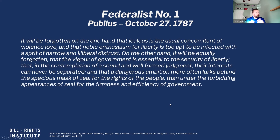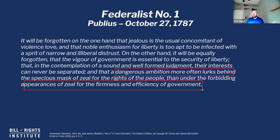He then builds on that, saying that vigor in government is essential to the security of liberty, and that in contemplation of a sound and well-formed judgment, their interests can never be separated. He says: 'A dangerous ambition more often lurks behind the suspicious mask of zeal for the rights of the people than under the forbidding appearance of zeal for the firmness and efficiency of government.' In other words, people claiming to speak on behalf of the people are more often a danger to liberty than those arguing the government needs to intervene. He's setting up arguments he's going to return to throughout the Federalist Papers.